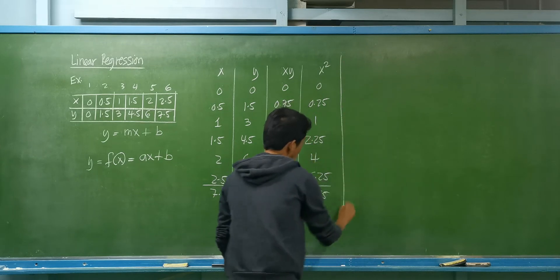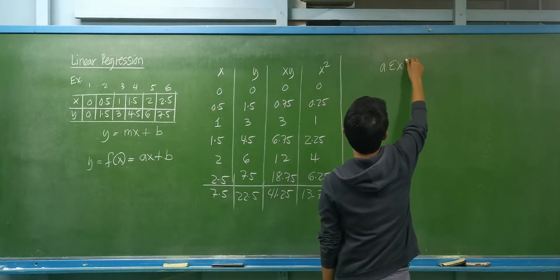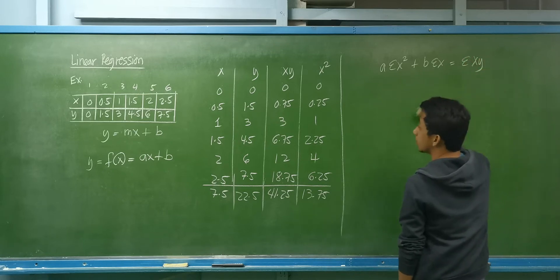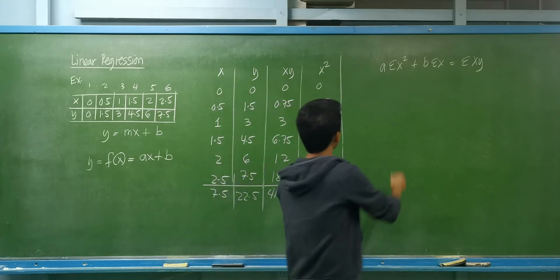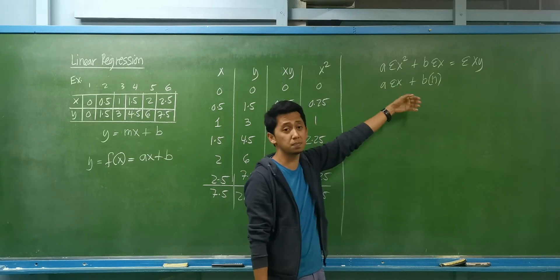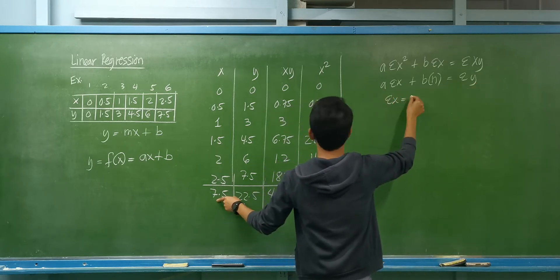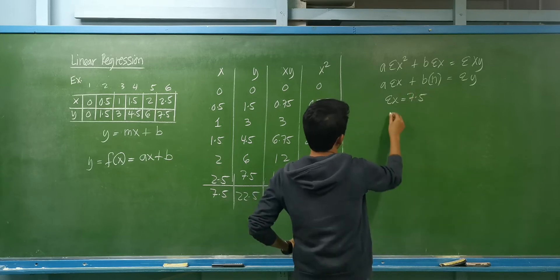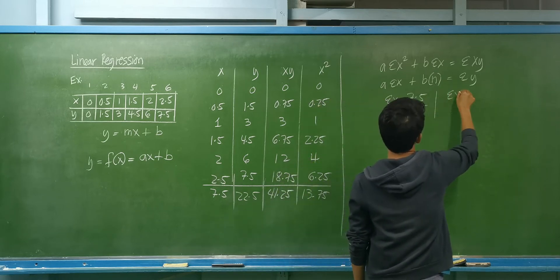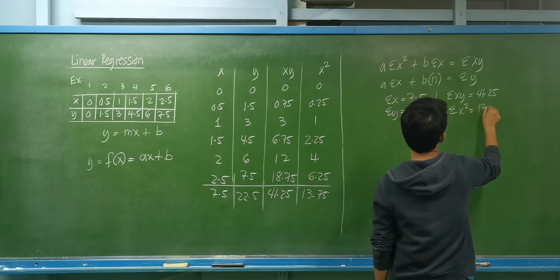For linear regression, we have two normal equations to determine the values of a and b. The first equation is: a·(Σx²) + b·(Σx) = Σxy. The second equation is: a·(Σx) + b·n = Σy. Substituting our values: Σx = 7.5, Σy = 22.5, Σxy = 41.25, Σx² = 13.75, and n = 6.